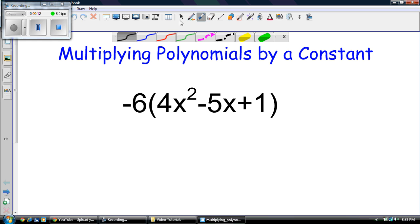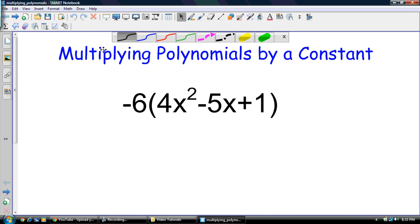So if you're multiplying polynomials by a constant, what you really have to remember is the distribution property. The distribution property states that if we have a number inside the brackets here, a negative 6, it's distributed to each thing inside the brackets. So it goes to this right here, goes to this right here, and it goes to this right here.